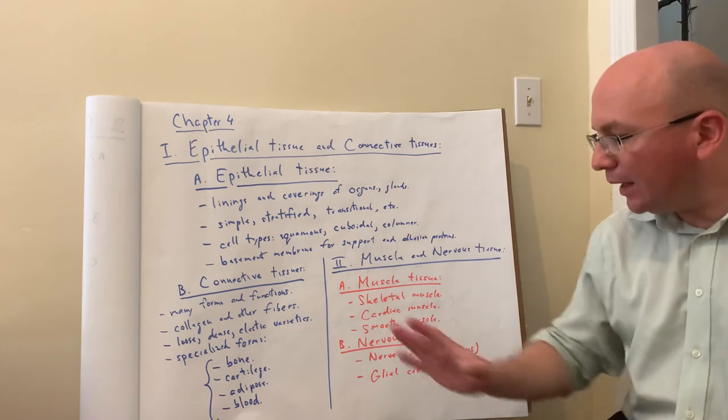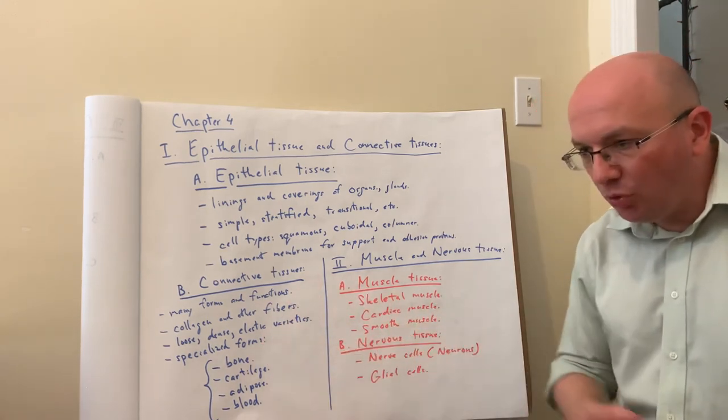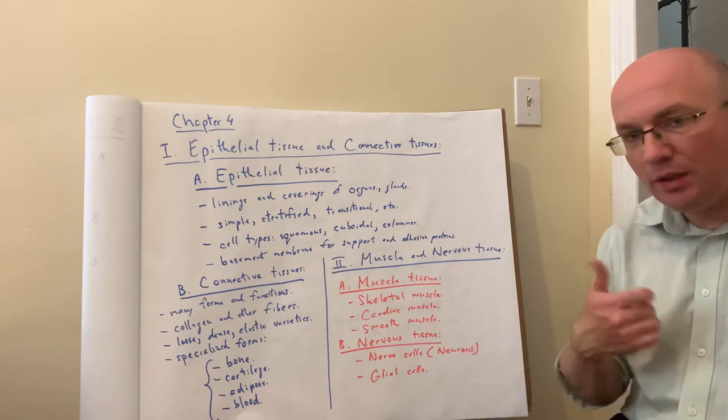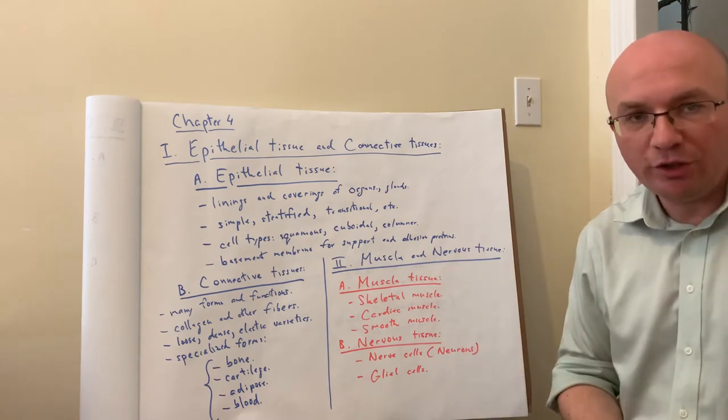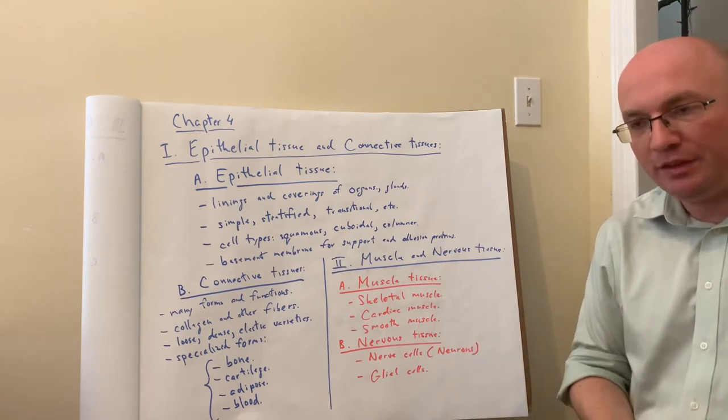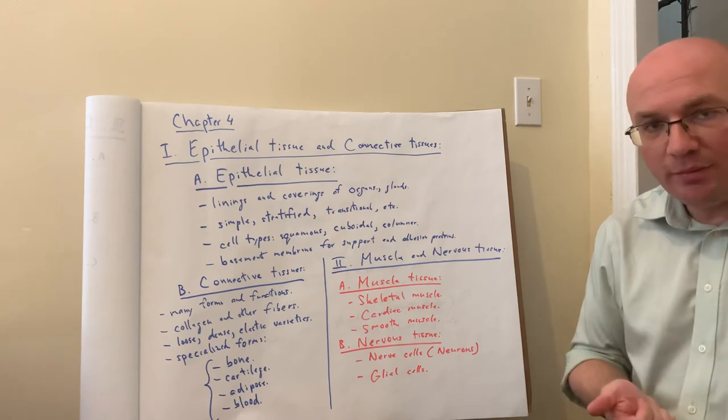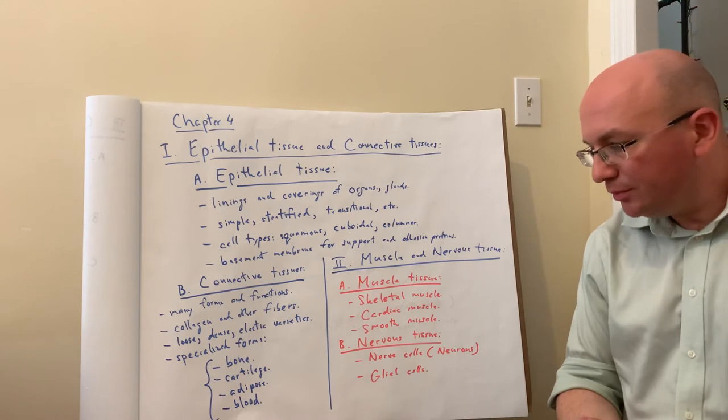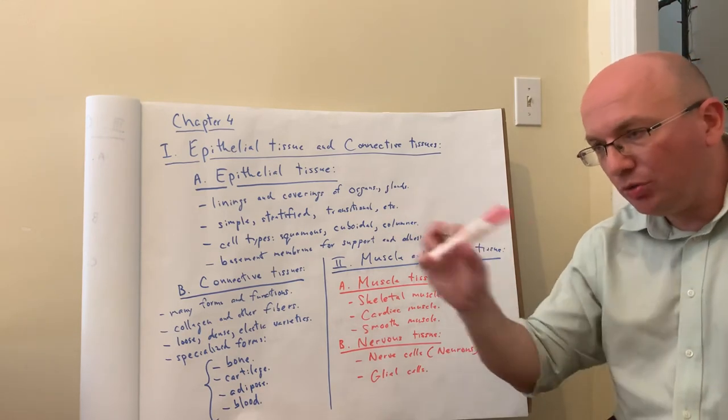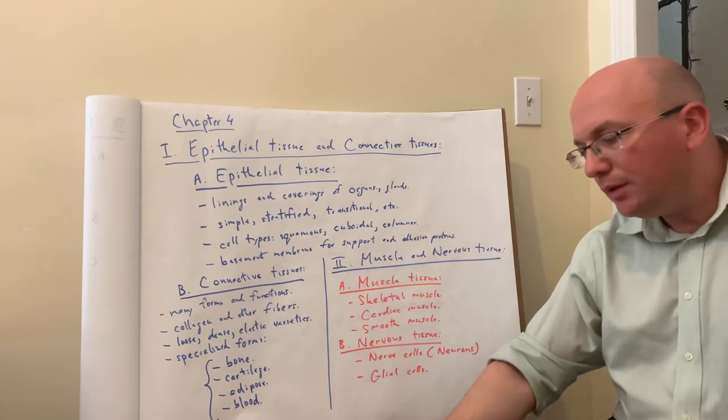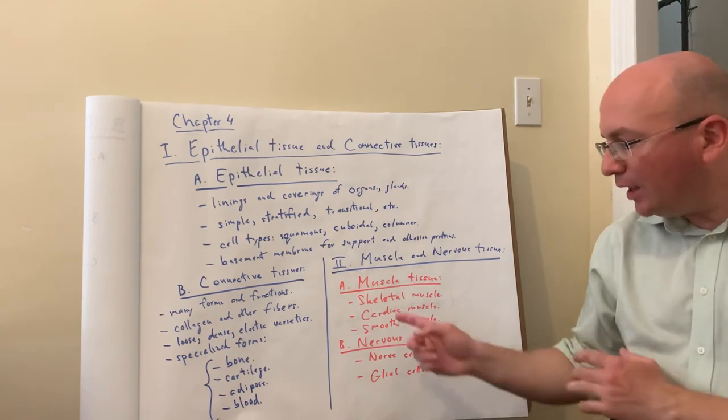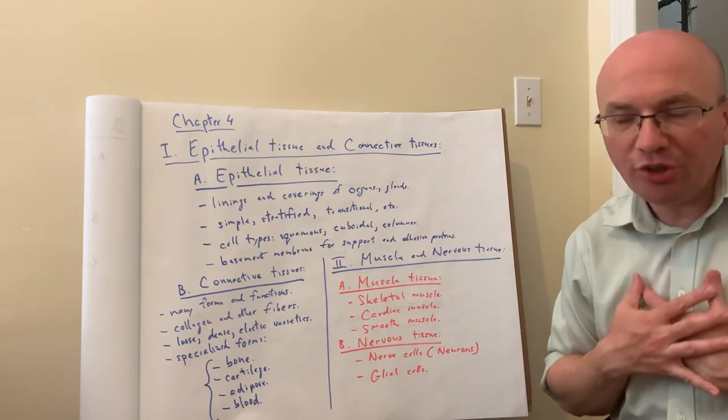For muscle, these are cells that allow for contraction and movement. There are three types of muscles in the body. Skeletal muscles do voluntary contractions, attached to the bones, like when you pick up an object and you are doing this voluntarily. These are muscles contracting attached to my bones.